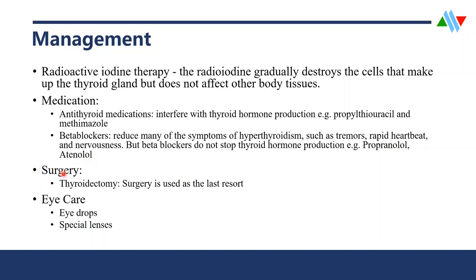Surgery is also done as a last resort — for example, thyroidectomy, where a section of the thyroid is resected and removed, anticipated to reduce the amount of T3 and T4 produced. For those who have exophthalmos, eye care is also important, including giving eye drops for the dry eyes that are a common feature, and special lenses for light sensitivity and other vision problems affecting the eyes.